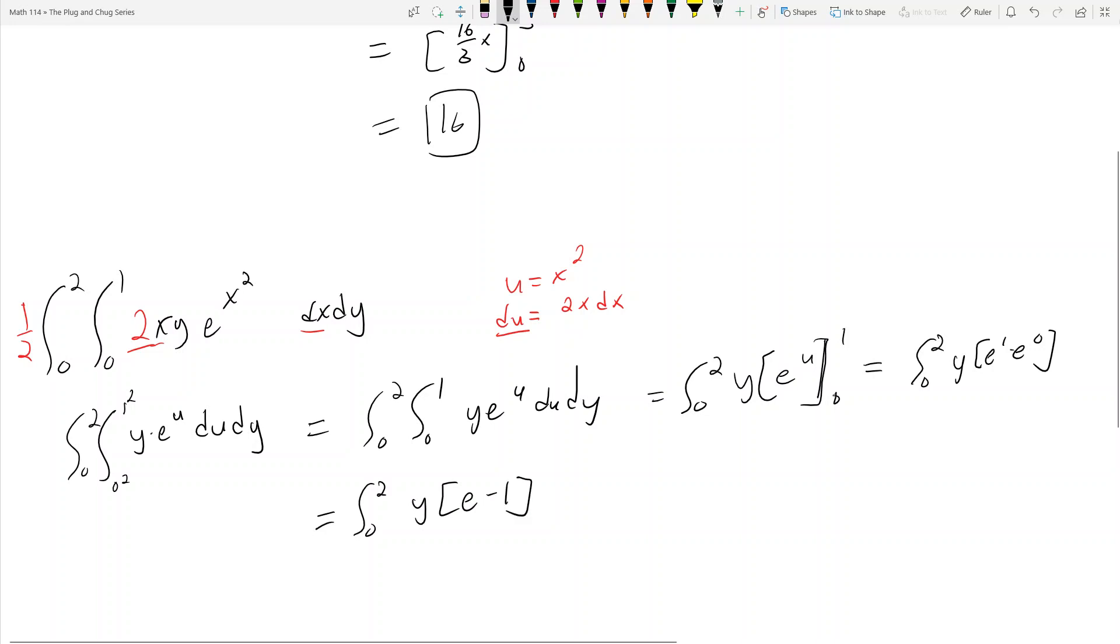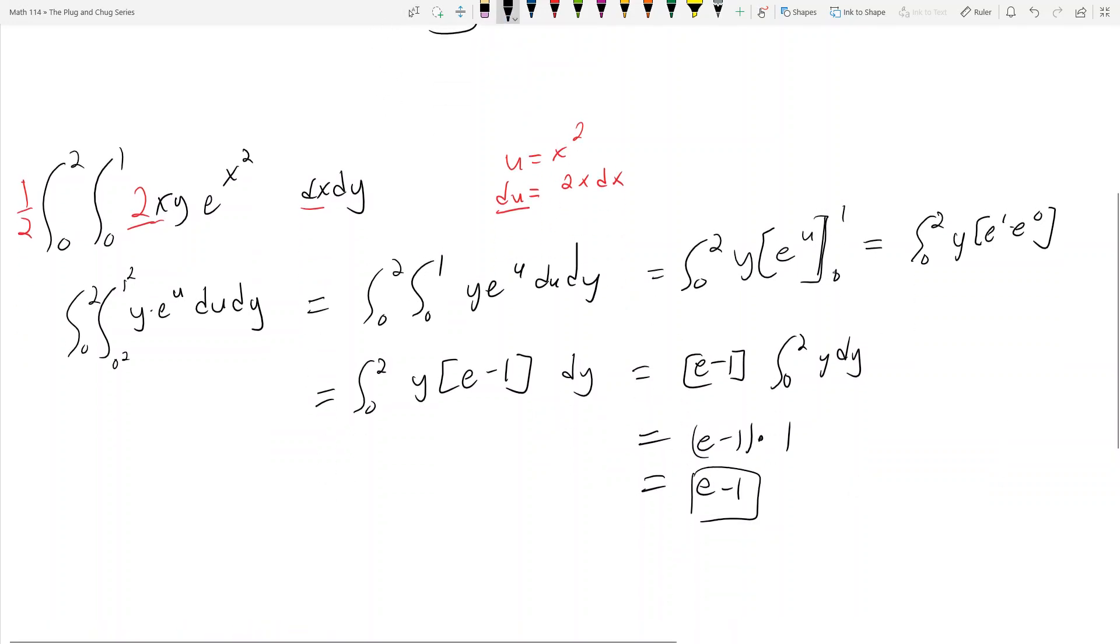Now what do we do now? Well now I've got to integrate y, right? So now I got to integrate y from 0 to 2. So this is equal to y squared over 2. Now I can actually pull e minus 1 out in front, so it's e minus 1 times the integral from 0 to 2 y dy. You guys can do that integral, but it equals e minus 1 times 1. So this final integral is going to be e minus 1.